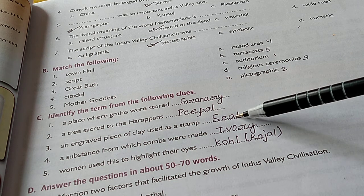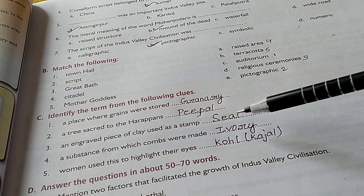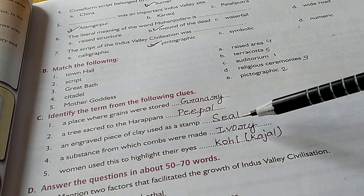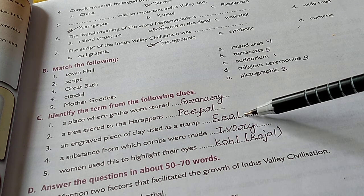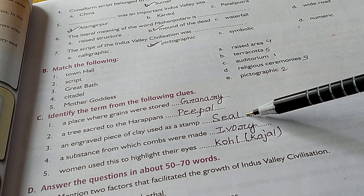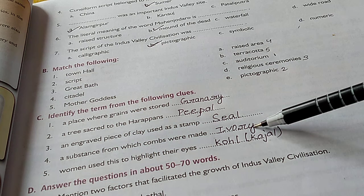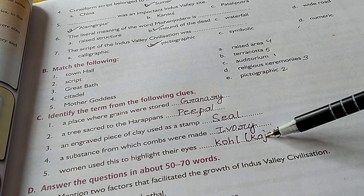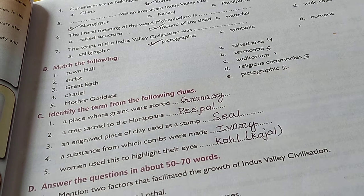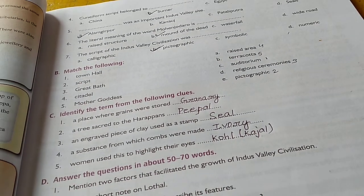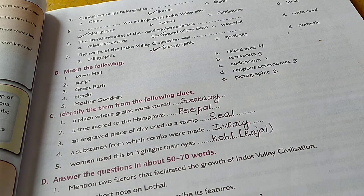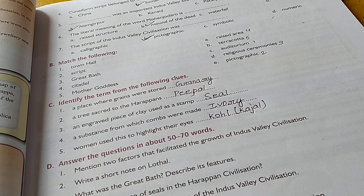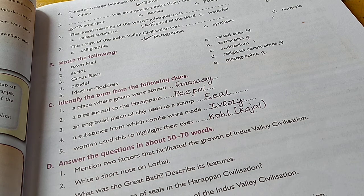An engraved piece of clay used as a stamp - piece of clay or very soft stone with pictures engraved on it used as a stamp, that is seal. A substance from which combs were made - ivory. The last one: women used this to highlight their eyes. At that time also women beautified themselves, wore jewelry, had many ornaments. They used kohl or kajal to highlight their eyes. Like still today, women do that to highlight their eyes.